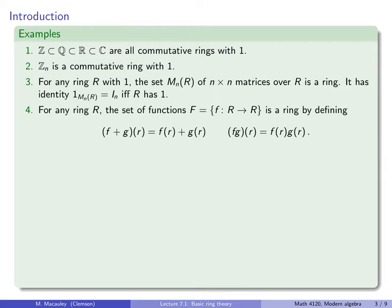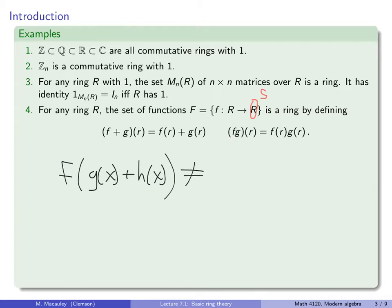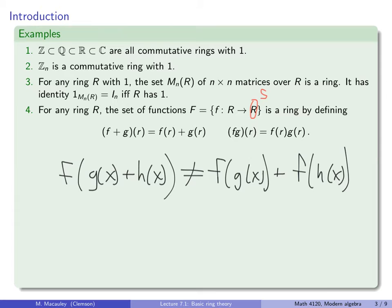This holds more generally if we replace the codomain R with a different ring S. It is tempting to define a ring where multiplication is function composition, but that doesn't necessarily work because the distributive law fails: f(g(x)+h(x)) need not equal f(g(x))+f(h(x)). Later, when we look at homomorphisms from a ring to itself, this property will come for free, and in that case we can define a ring of homomorphisms where multiplication is function composition.